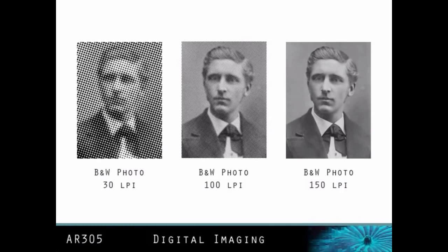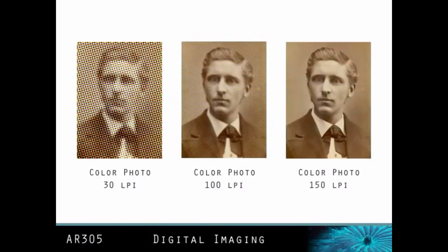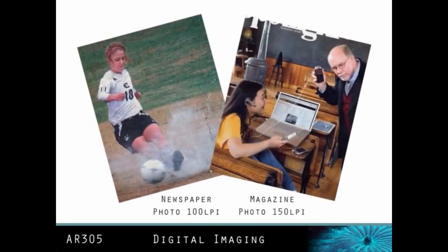To reproduce a black and white photograph, only black ink is used. To reproduce a colored image, cyan, magenta, yellow, and black inks are typically used. The same concept applies, however we are now using translucent inks, and when they are combined on paper, our eyes blend the colors together. The resolution of a halftone line screen is referred to as lines per inch, or LPI.